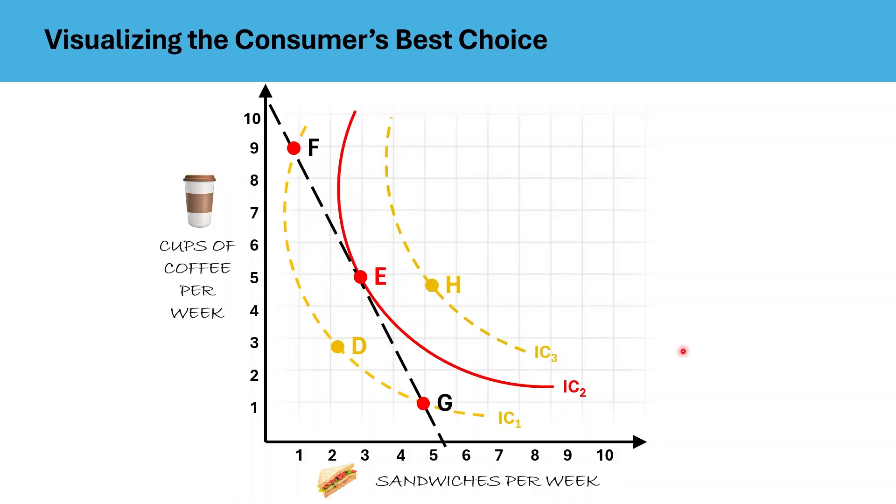On the other hand, any point inside the budget line, like point D, is within reach. But there is a catch. While D is affordable, it gives the consumer less satisfaction than combinations on the budget line like F, E, G because it lies on a lower indifference curve, IC1. Plus, choosing D would mean not using up his entire income, which is represented by this budget line, which is inefficient from the consumer's point of view.